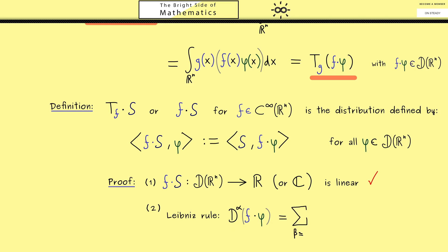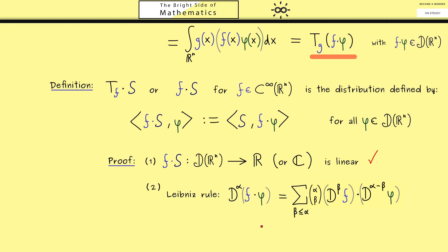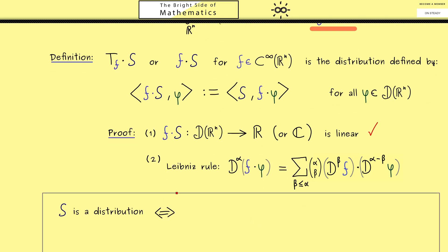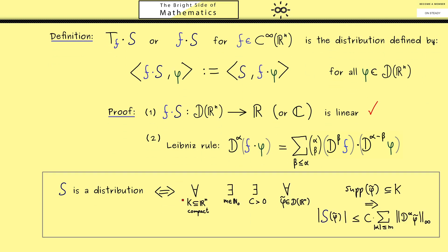Note that we use multi-indices beta and alpha. The general product rule tells us that we sum over all combinations where beta is less than or equal to alpha, giving us d-beta and d-(alpha minus beta). The explicit formula is not important — only that we have a finite sum. We can then simply use the characterization for distributions from part 5, which states: a linear map is a distribution if and only if for each compact set we find an index m and a constant c such that for all test functions with support in that compact set, we have the following inequality.